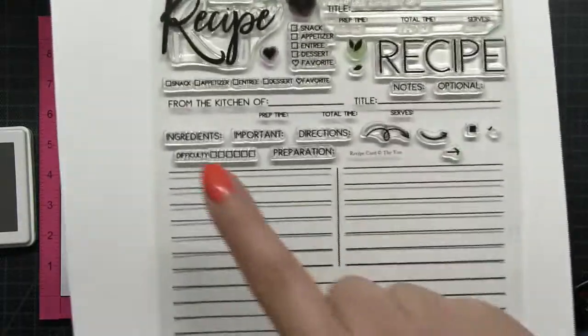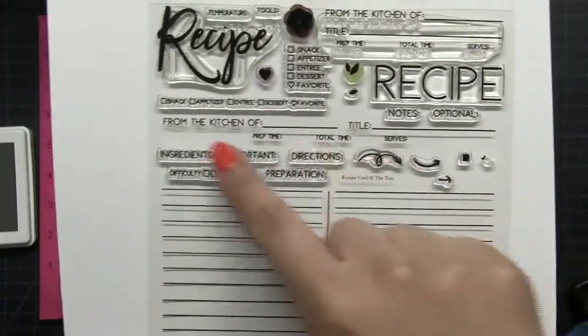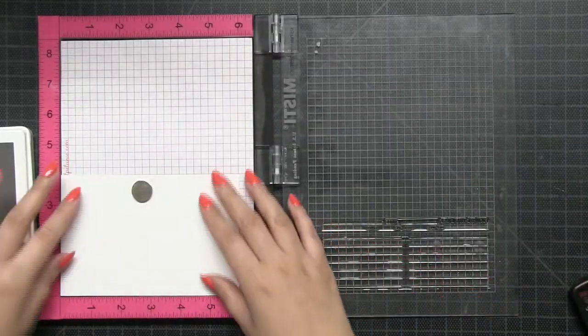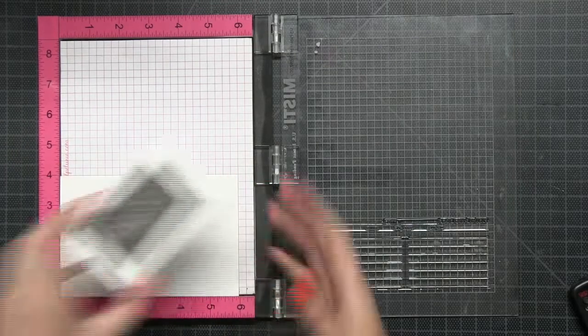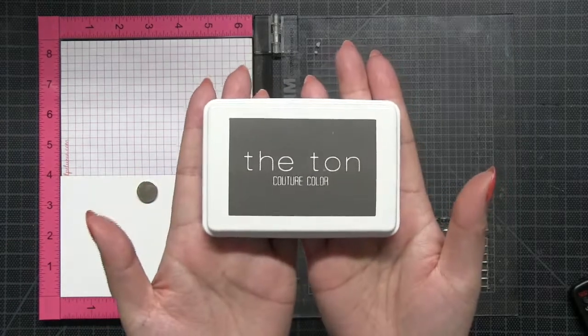And then I also have this one on my MISTI - it's the horizontal layout of more of the details that you usually include on your recipe card. So let's get to stamping.